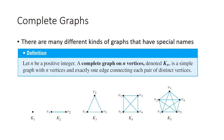Let n be a positive integer. A complete graph on n vertices, denoted K_n, is a simple graph with n vertices and exactly one edge connecting each pair of distinct vertices. These pop up a lot in graph theory — the radio tower example was actually a complete graph on five vertices, K_5. The first five complete graphs are drawn by placing n vertices and then connecting them all to each other.